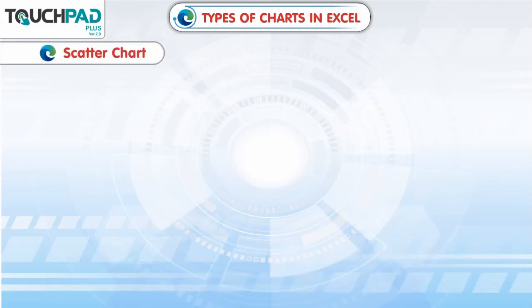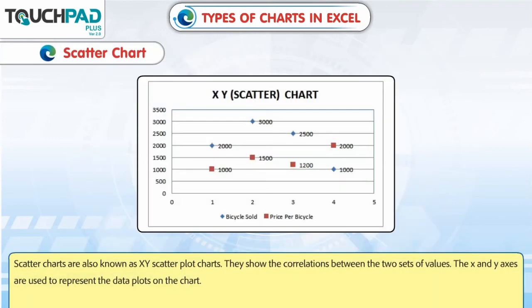Scatter chart: Scatter charts are also known as XY scatter plot charts. They show the correlations between two sets of values. The X and Y axis are used to represent the data plots on the chart.